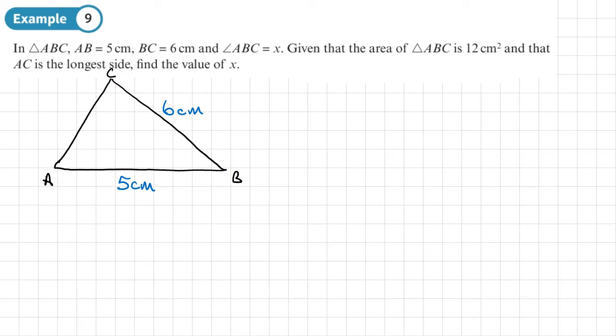so ABC is X. So this angle here is X. Now we know that the area of the triangle is 12 centimetres squared and we want to find the value of X.